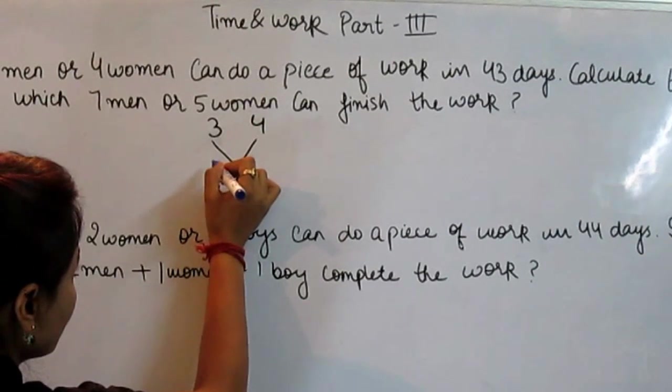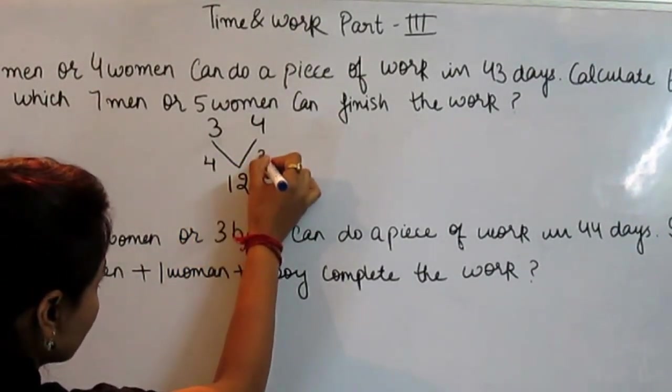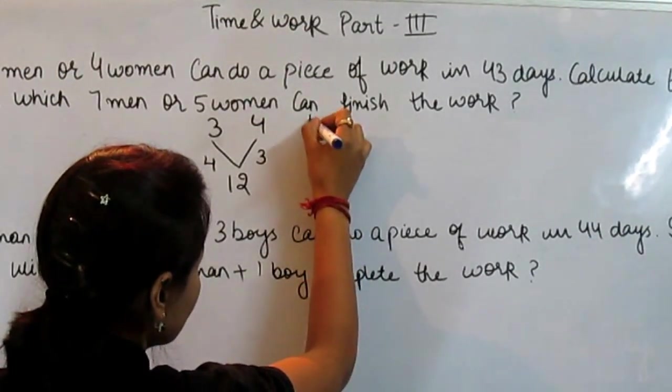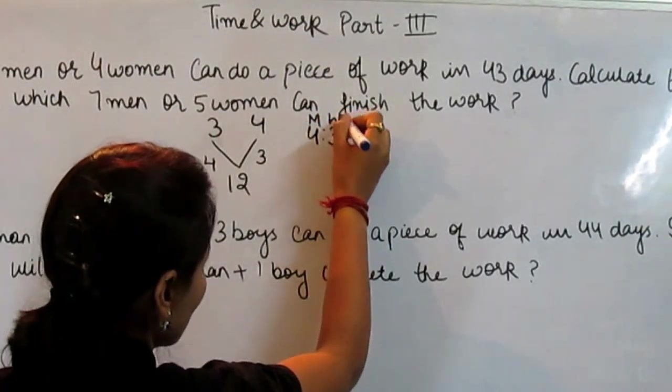Now what is the ratio? That is 4 and 3. Ratio is 4 and 3. This is the ratio of man and this is the ratio of woman.